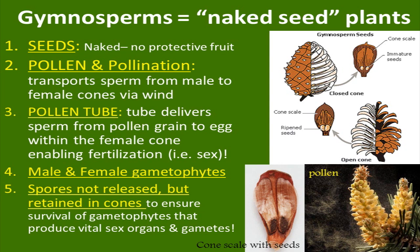The female gametophyte is an egg and the male gametophyte is the pollen. Spores are not released but retained in the cones for female gametophytes — this ensures the survival of the gametophytes that produce the vital sex organs and gametes. We can see in the top right diagram an open cone with ripened seeds sitting on something called a cone scale. Then we have a closed, immature cone — typically green — with cone scales and immature seeds. We can also see the pollen cones in the bottom right, with a cloud of orange pollen flying away from the male cones.